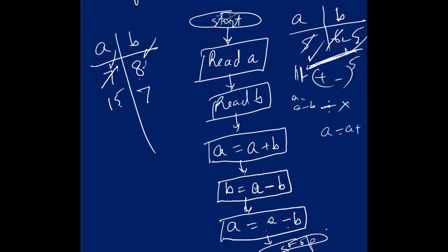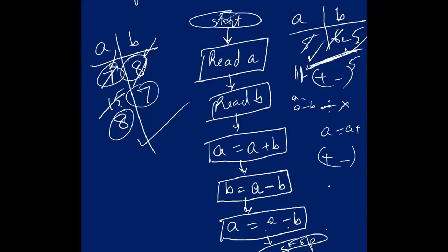15 minus 7, 15 minus 7, that is equal to 8. We have interchanged it — initially it was 7 and 8, now it is 8 and 7. So we have achieved swapping. Similarly, we can use multiplication and division methods.